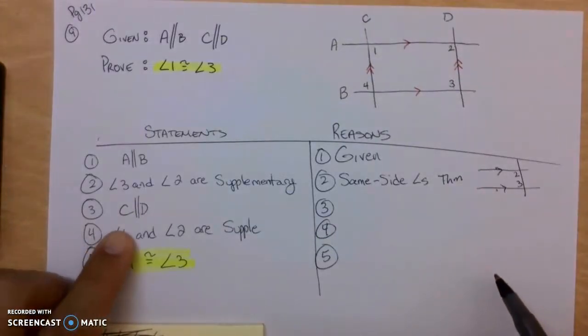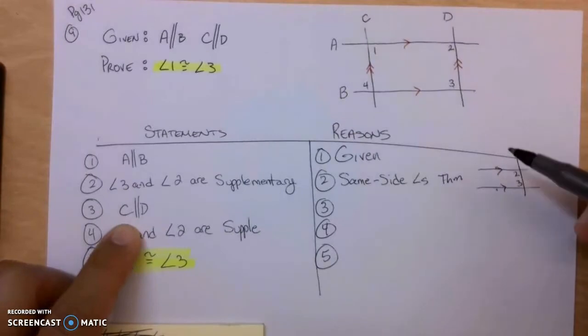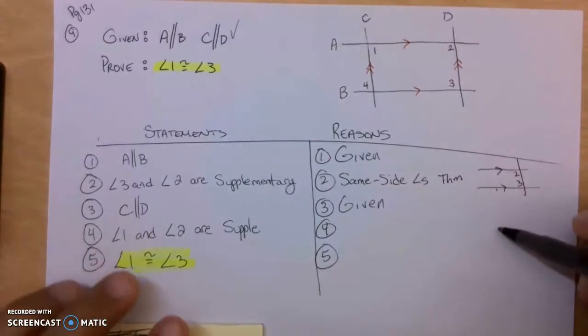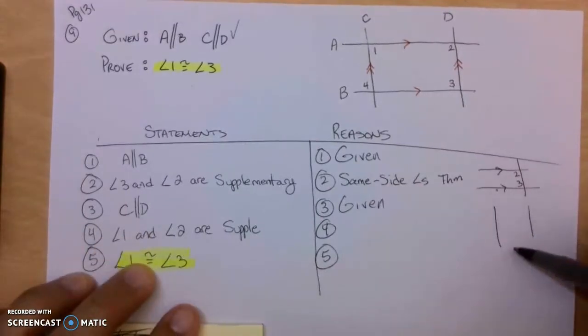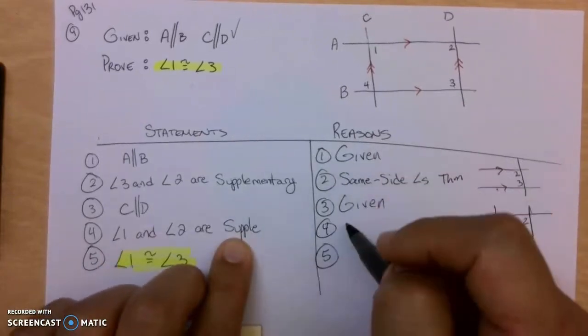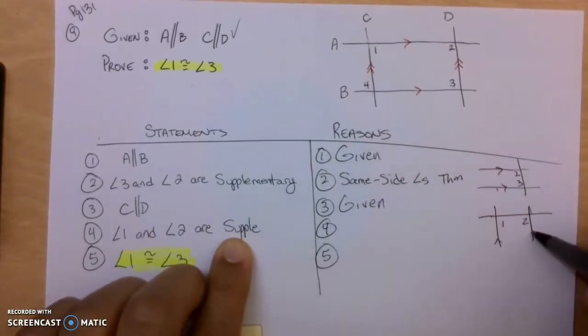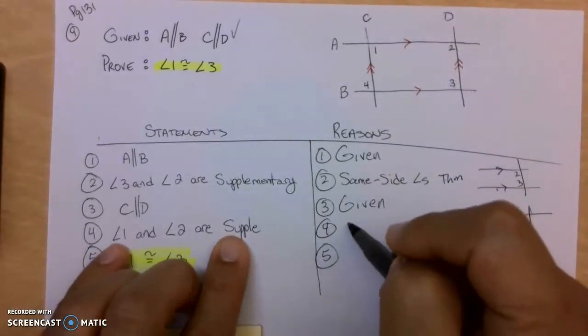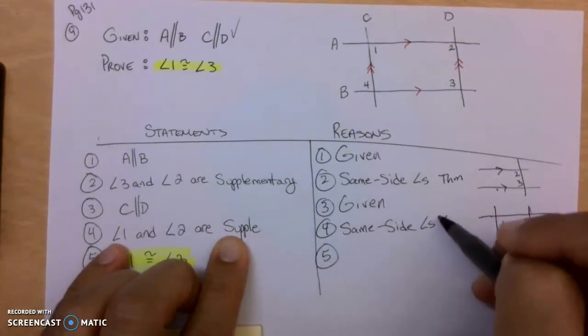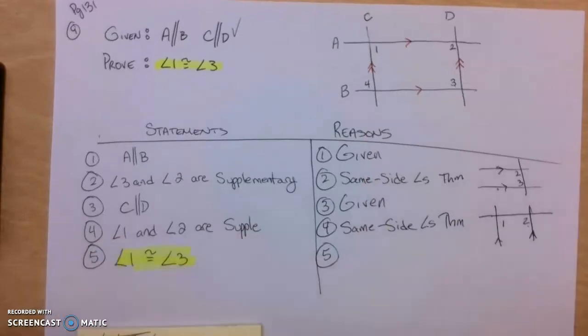Step 3. Line CD, the lines going up and down, are parallel. Well, that's also given. So if you've got lines that are C and D that are going parallel up and down, certain angles are congruent, or in this case step 4, certain angles like 1 and 2 are supplementary. Same reason. Since these two lines going up and down, C and D are parallel, angles 1 and 2 add up to 180 because of Same Side Interior Angles. When lines are parallel, Same Side Interior Angles add up to 180.